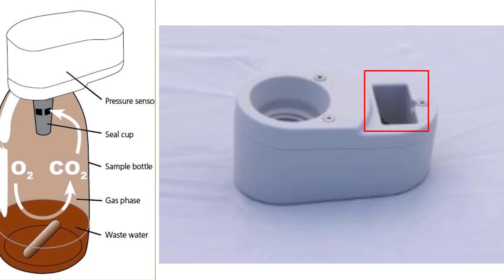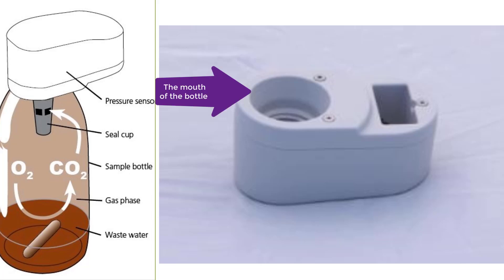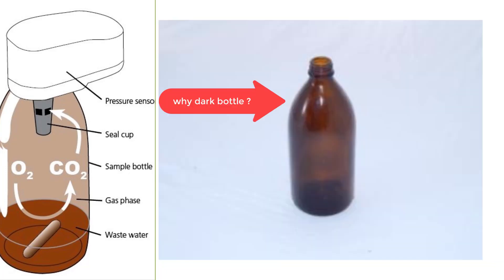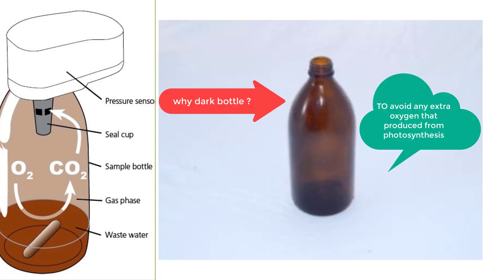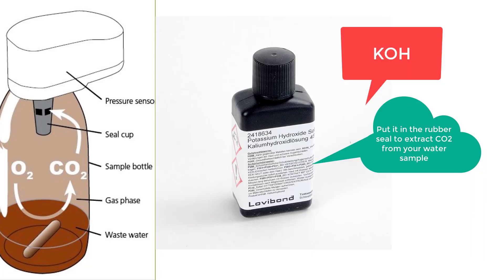This is a cover from the Lovibond company where you can see the sensor location and where you place your bottle. This is a BOD dark bottle, and it is dark because we want to avoid any extra oxygen produced from photosynthesis.